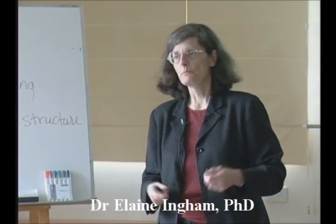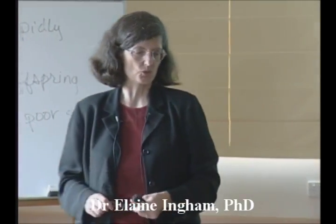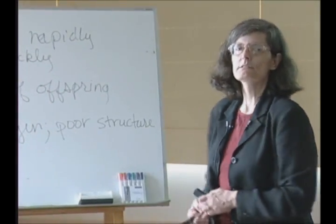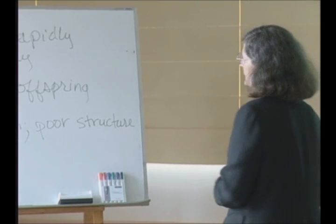So weeds reproduce rapidly. They grow quickly, they produce lots and lots of seeds, and they disperse far and wide. And they do better under conditions of lack of oxygen, poor structure, and compacted conditions in our soils. Here's the ecological definition of a weed.